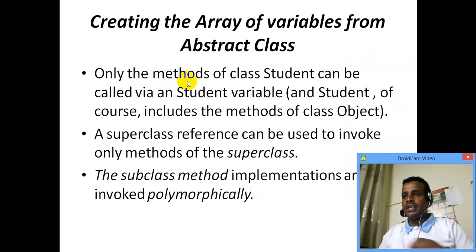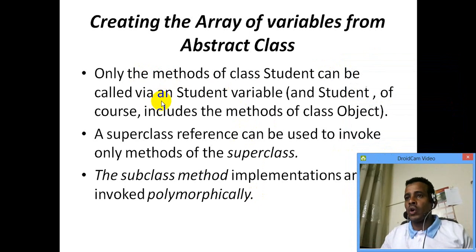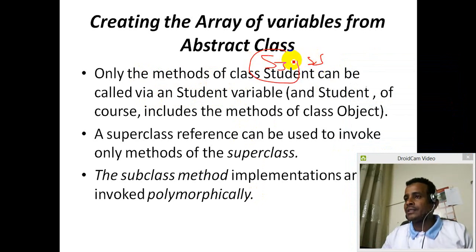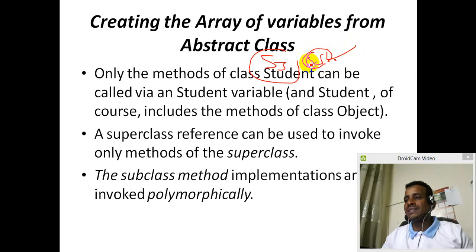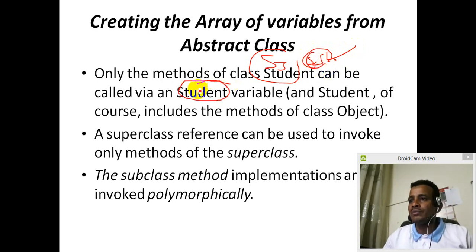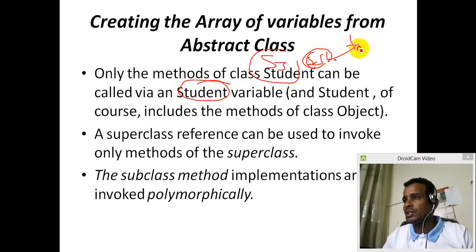Now, only the methods of class Student can be called via a student variable. Student is called, SS is called. The toString method is called — in SS, the toString is called, all of course via the student value. Now, our students actually call the toString method.